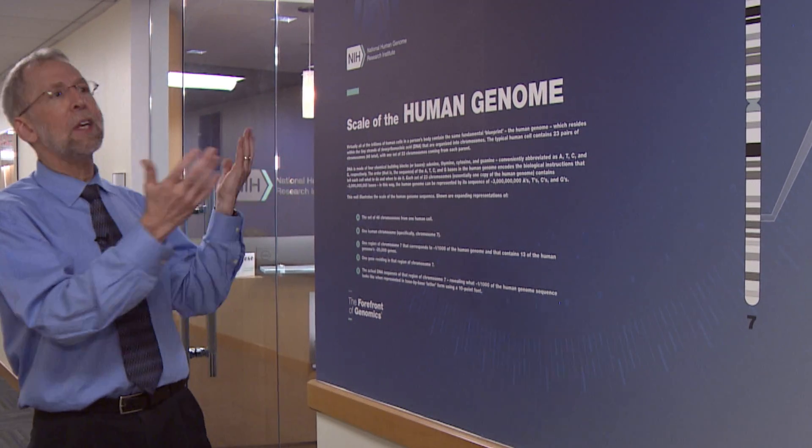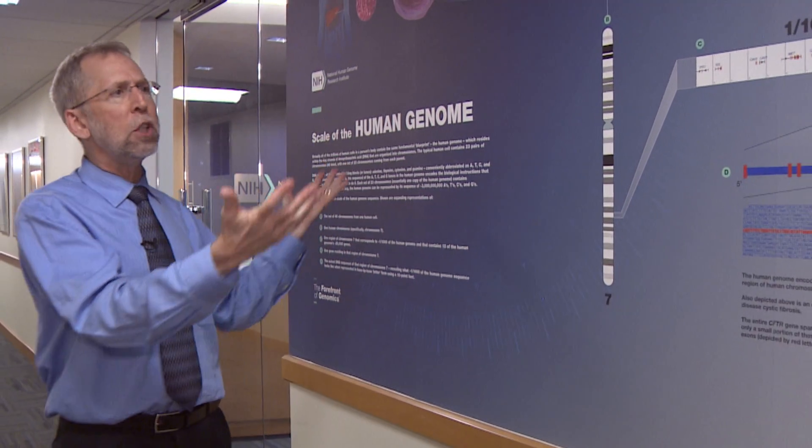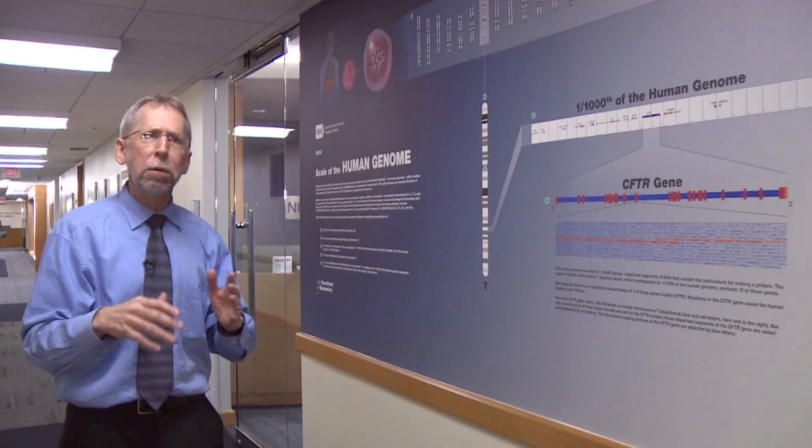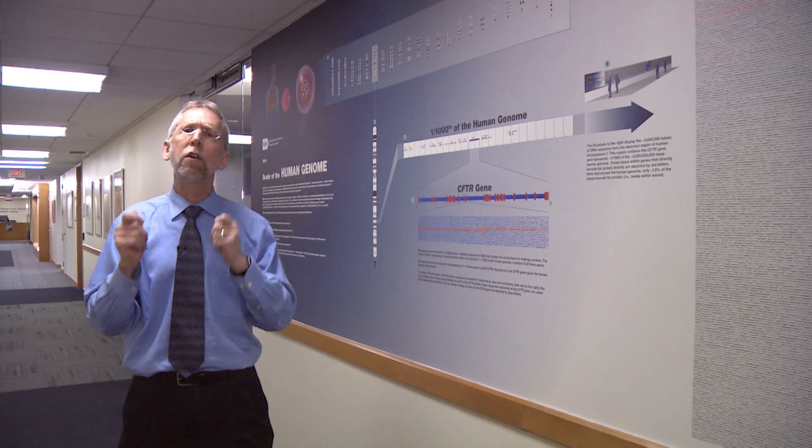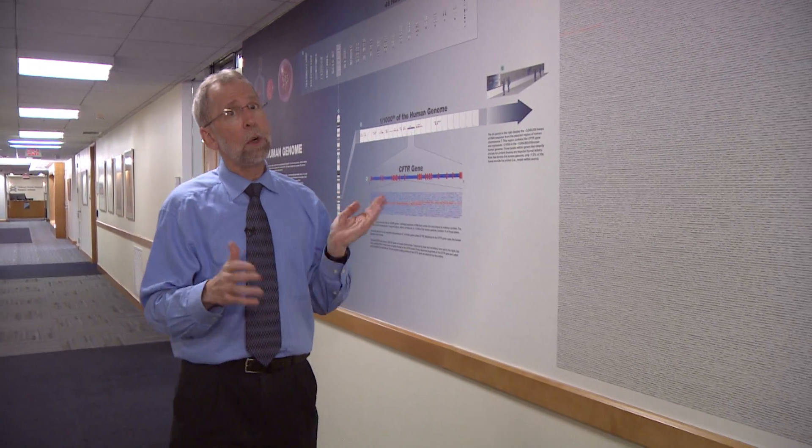So here in this hallway, we put together an exhibit that helps to explain that. We basically decided to take the human genome and represent not all of it because our hallway is not big enough, but just represent one one thousandth of it. So one one thousandth of three billion letters. And we couldn't make the letters very big. If we did, it wouldn't fit the hallway.